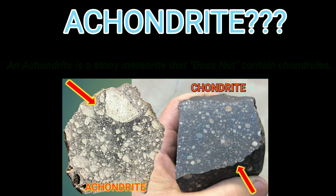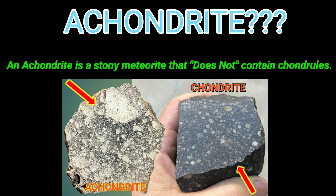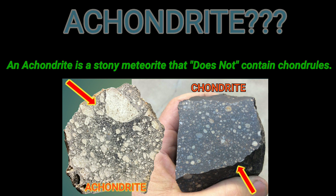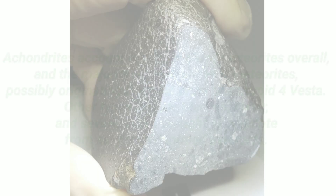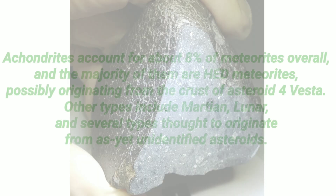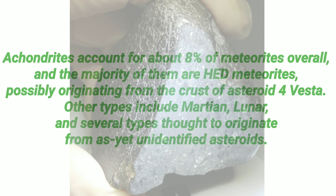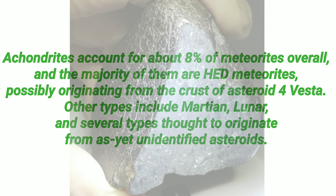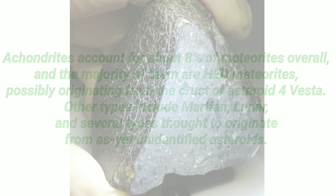What is an Achondrite? An Achondrite is a stony meteorite that does not contain chondrules. Achondrites account for about 8% of meteorites overall, and the majority of them are HED meteorites, possibly originating from the crust of asteroid 4 Vesta. Other types include Martian, Lunar, and several types thought to originate from as yet unidentified asteroids.